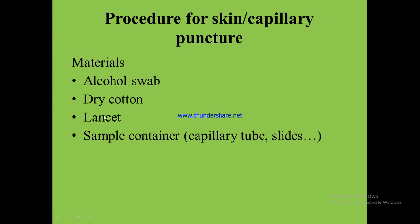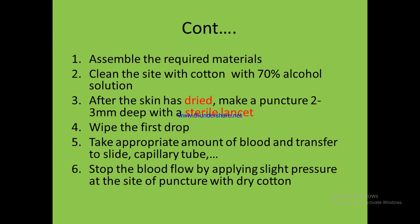Procedure materials include alcohol swab, dry cotton, sterile lancet, and sample containers such as capillary tubes and slides. After assembling the required materials, clean the skin with 70% alcohol swab, then puncture after the skin is dried using a sterile lancet. Wipe away the first drop because it can contain tissue fluid which may interfere with the test result. Then take the appropriate amount of blood and apply dry cotton at the end to stop bleeding.